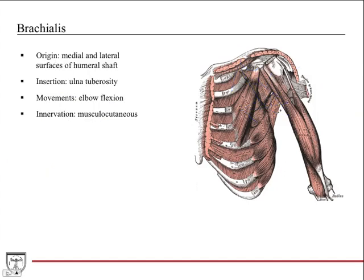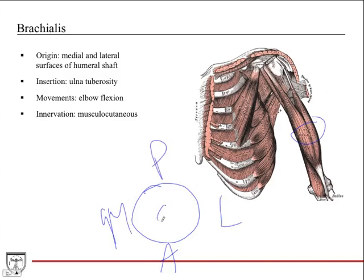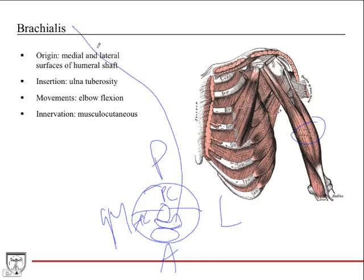The brachialis muscle's distal portion is visible here; the proximal portion, where it originates, is deep to the biceps brachii. In cross-section, you have the biceps brachii superficially, and just deep to that, on top of the humerus, is the brachialis. It originates from the medial and lateral surfaces of the humeral shaft and inserts onto the ulnar tuberosity on the proximal ulna. It crosses the elbow joint and produces elbow flexion. Innervation is musculocutaneous.